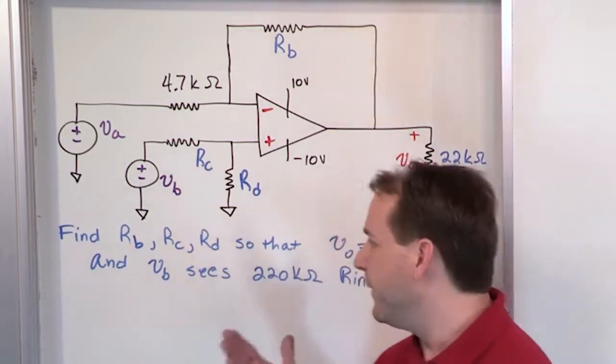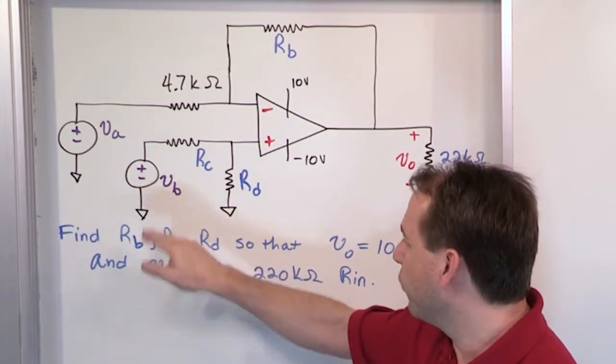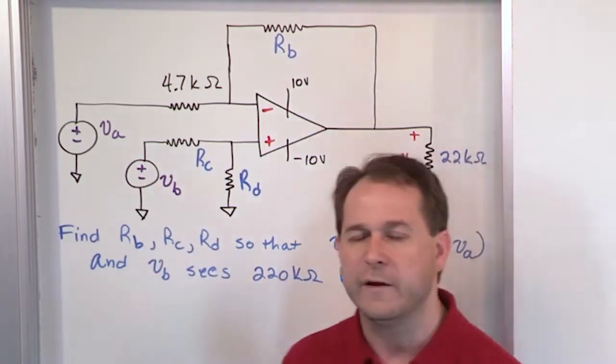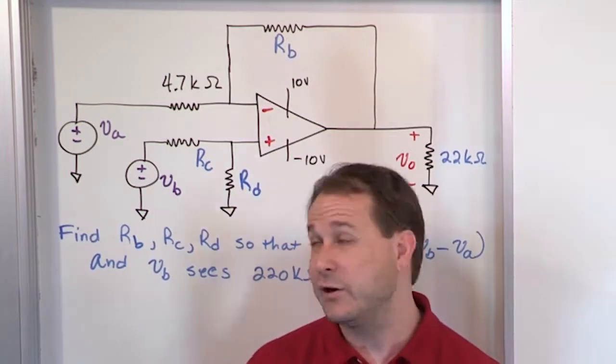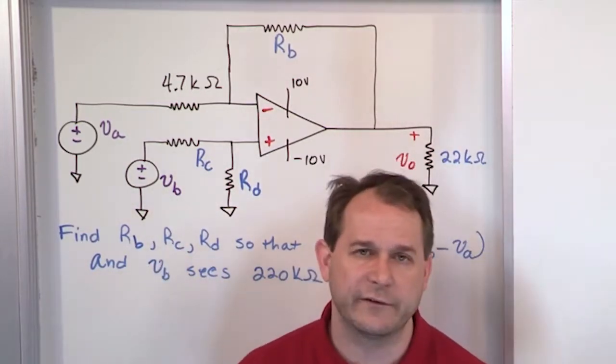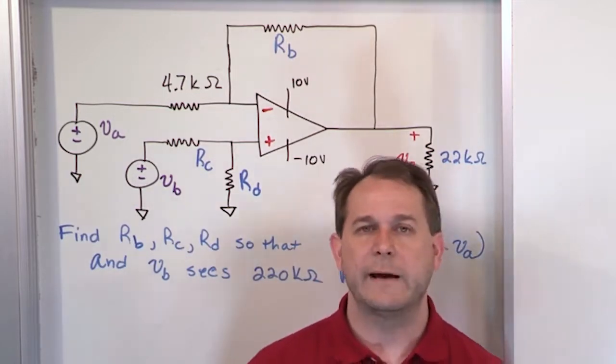You also have very weird constraints that you have to have the output voltage equal to this and that this source sees a certain input resistance. So this looks like a test question designed to make you really freak out because you're thinking you have three unknowns. You're probably going to have three equations, simultaneous equations to solve. But it turns out that this problem is very simple to solve once you think about it logically.